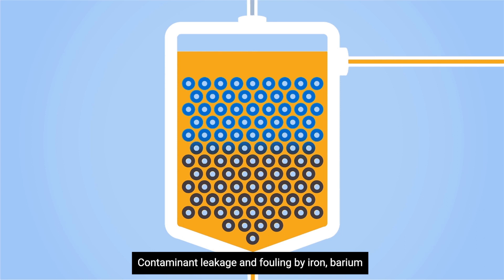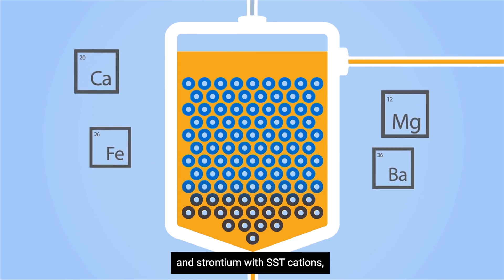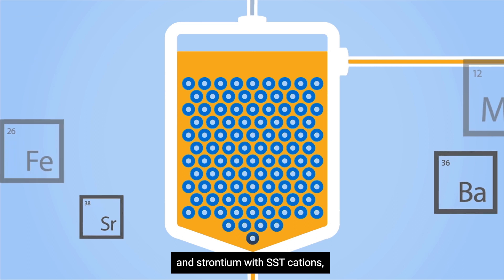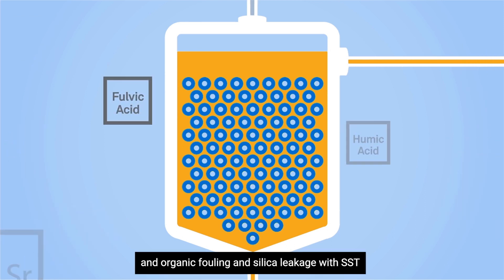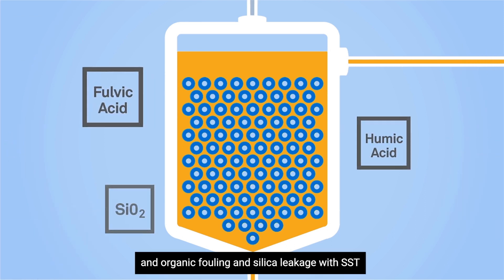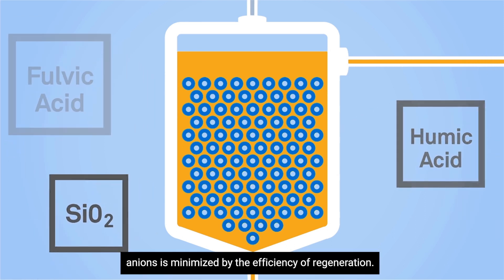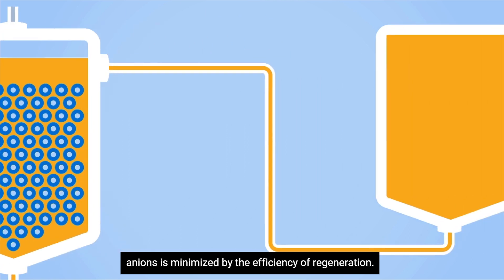Contaminant leakage and fouling by iron, barium, and strontium with SST cations, and organic fouling and silica leakage with SST anions, is minimized by the efficiency of regeneration.